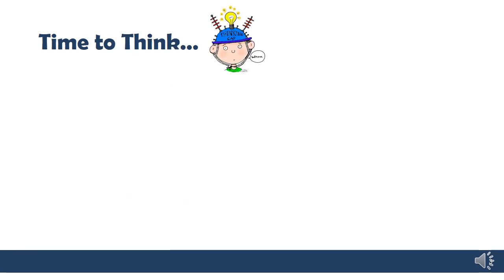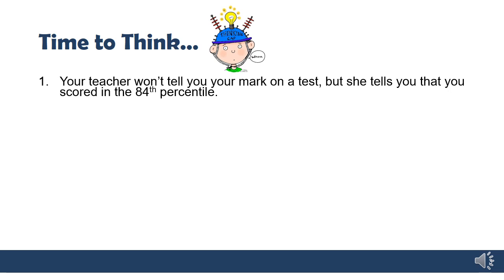Let's look at a few examples. Your teacher won't tell you your mark on a test, but she tells you that you scored in the 84th percentile. Is this good or bad? This means 84% of people scored below you. So this is a really good thing—you did better than 84% of people.